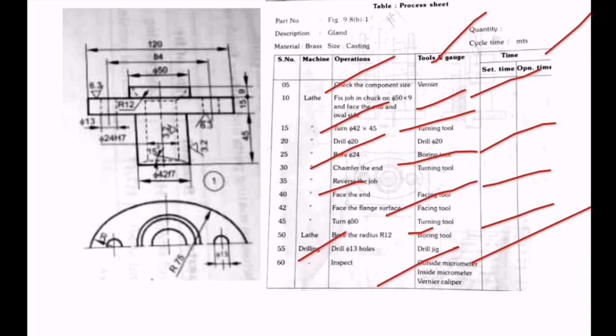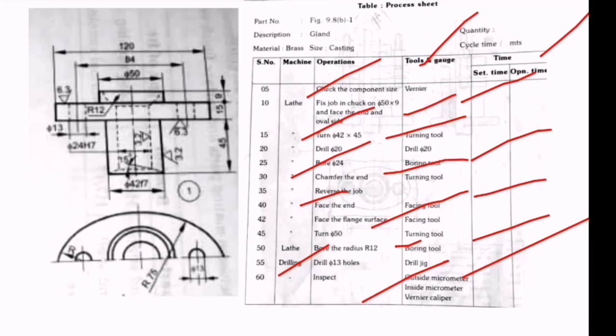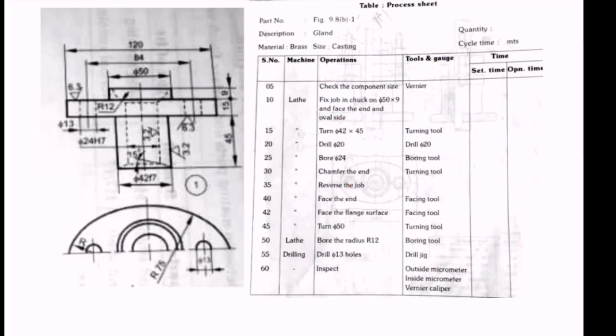This is how to prepare a process sheet for every component. If you are a mechanical engineer and know different operations - turning, facing, drilling - you can prepare a process sheet by looking at the figure itself. If the figure has a hole, we understand it's produced by drilling. If enlargement is required, we do boring. Similarly for facing, turning, and grinding operations, followed by final inspection.